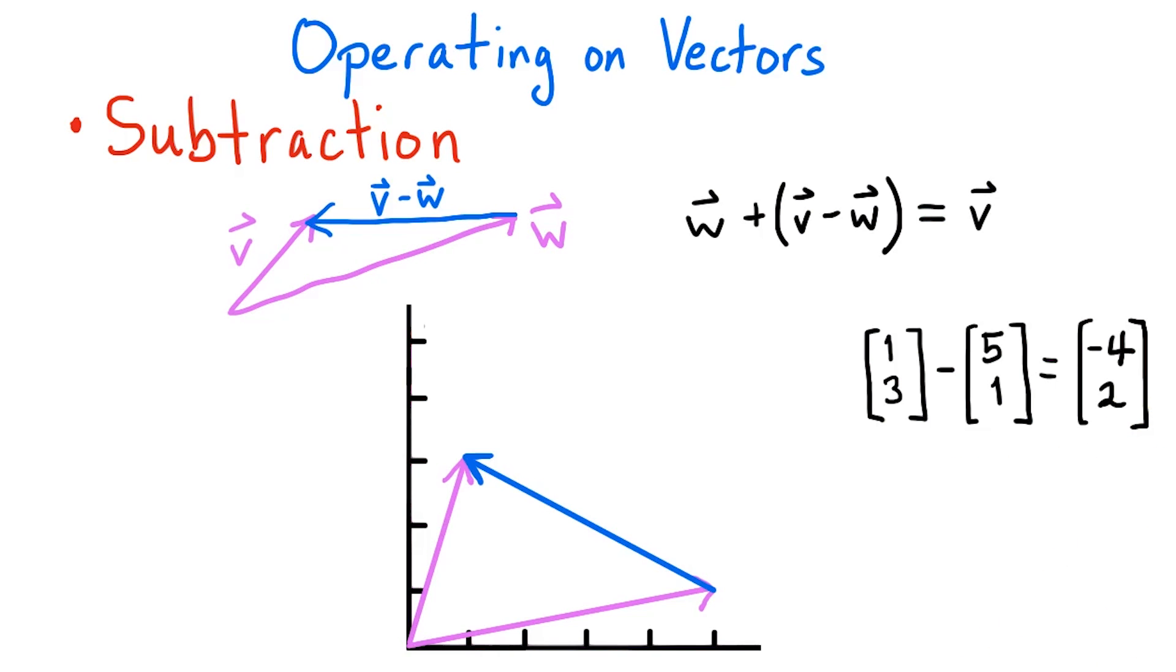This is reflected in our drawing, since the difference vector represents a change of 4 units to the left and 2 units up. This time, if we look at our parallelogram formed by x and y, notice that x minus y connects the heads of the two initial vectors in our chains.